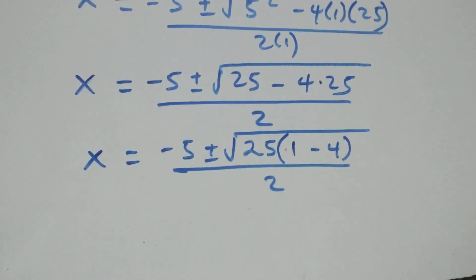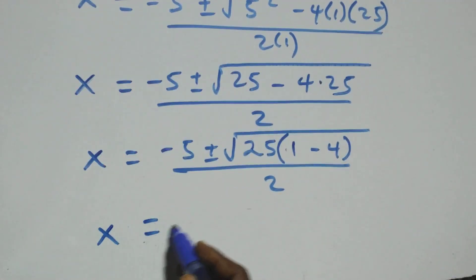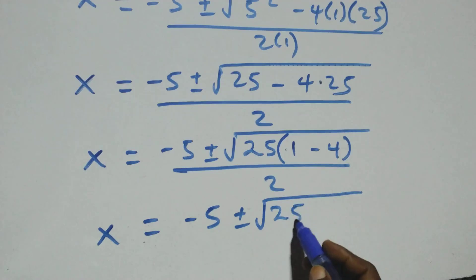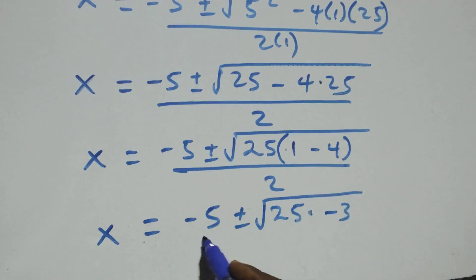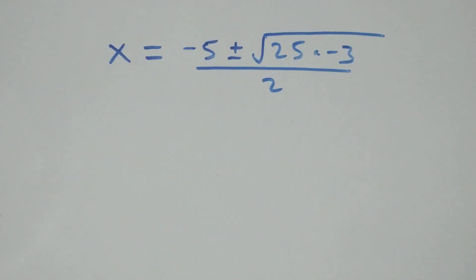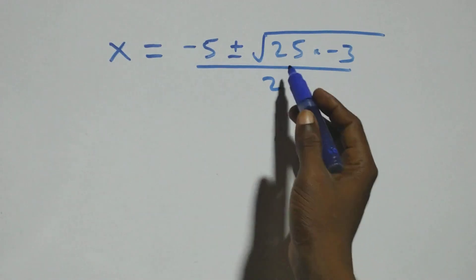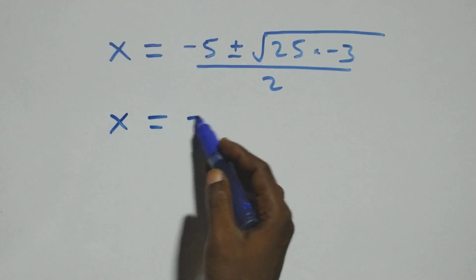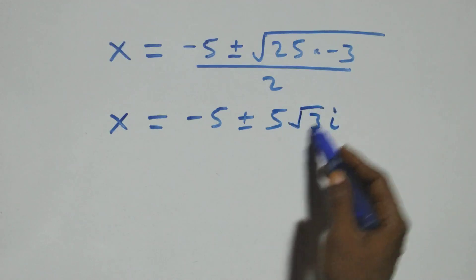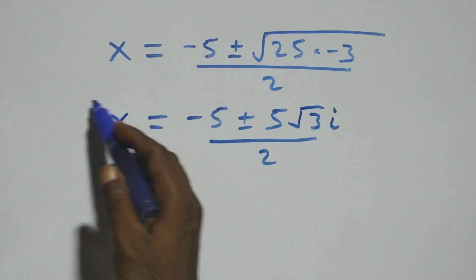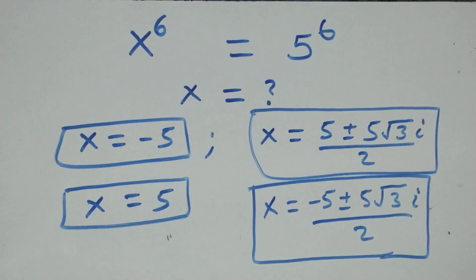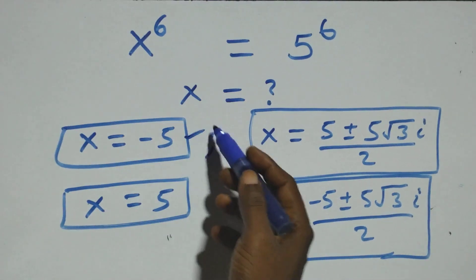That gives x equals minus 5 plus or minus square root of 25 times (minus 3), all over 2. Separating root 25 as 5, we take it out and get x equals minus 5 plus or minus 5i root 3, all over 2. These are also two complex solutions. Therefore, all together in this problem we have six solutions: two real solutions and four complex solutions.